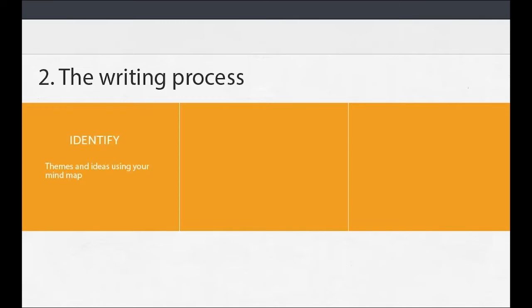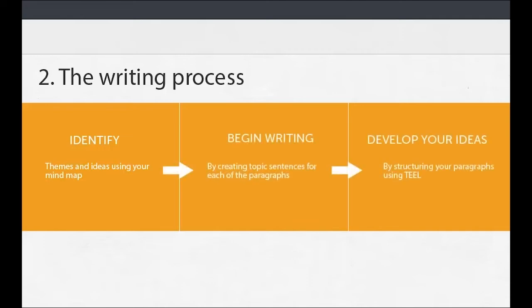Now it's time to start writing your artist's statement. First, look at each category in your mind map and identify the main theme or idea that answers each question. Complete the writing process by structuring your paragraphs based on the mind map.